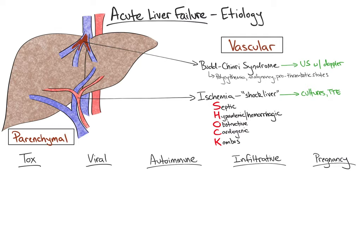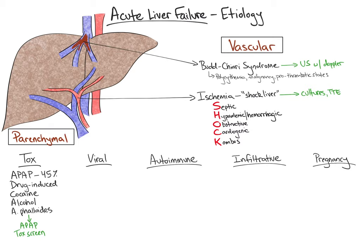The leading cause of acute liver failure in North America is acetaminophen overdose, accounting for approximately 45% of cases. Typical ingestions causing failure exceed 10 grams per day, but failure can occur with doses as low as 4 grams per day. The second most common cause is drug-induced, from any number of drugs and supplements. Additional toxicologic causes include cocaine, alcohol, and the Amanita phalloides, or death cap, mushroom. To work up toxicologic etiologies, we obtain an acetaminophen level, urine and serum toxicology screen, and perform a thorough medication and supplement review if possible, including a review of the Livertox online database.